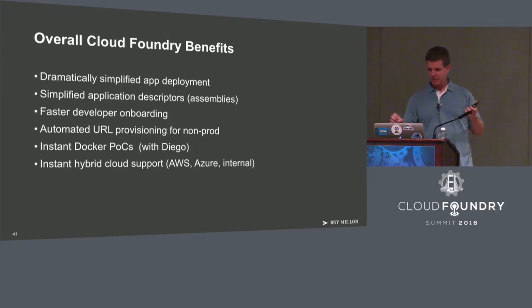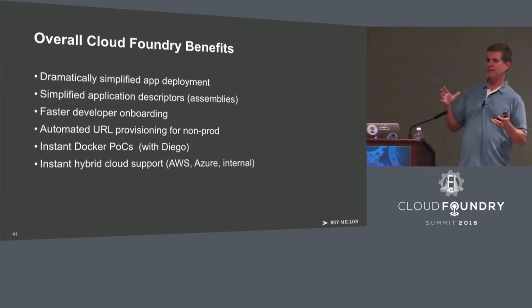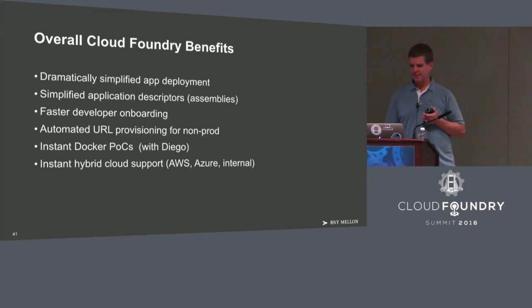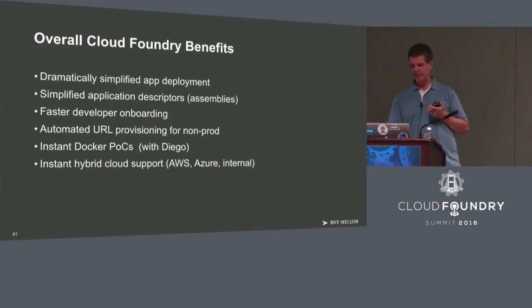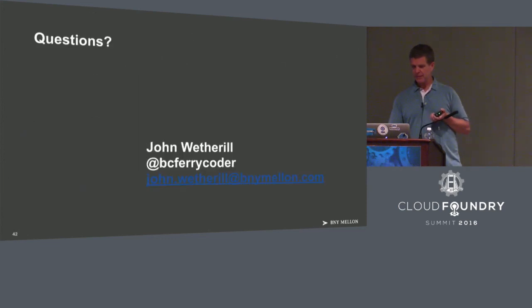Greatly simplified app deployment. Our app descriptors — if we use Cloud Foundry for certain classes of apps, we can simplify the descriptors and specification. Much faster to bring a developer on board to figure out how to provision an app to the cloud. The URL provisioning, Docker POC — we can do some Docker work with Diego and the hybrid cloud.